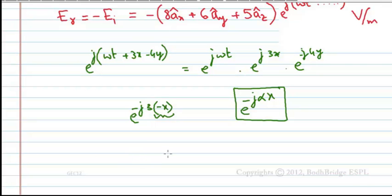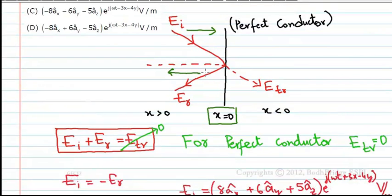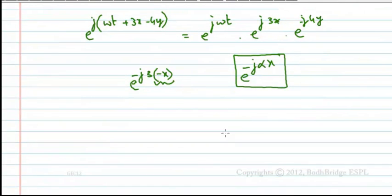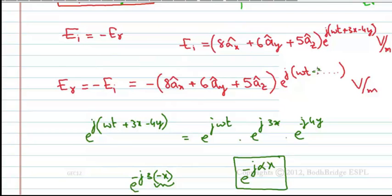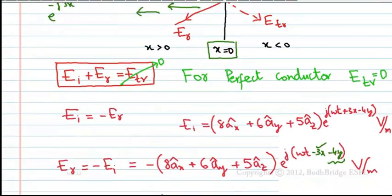Upon reflection, the direction reverses — the wave now travels in the +x direction. Therefore, the x-component of the phase changes sign: e^(j3x) becomes e^(−j3x). The y-component is not affected since the slab is at x = 0 and reflection only reverses the x-direction. So the phase term becomes e^(jωt − 3x − 4y).